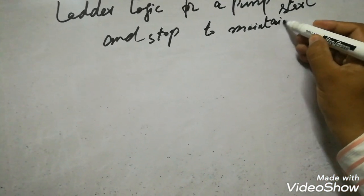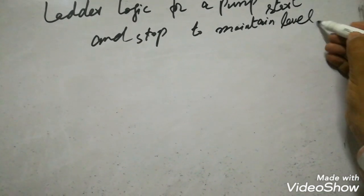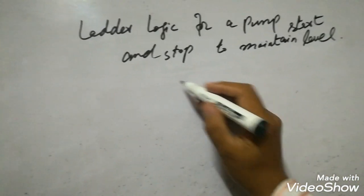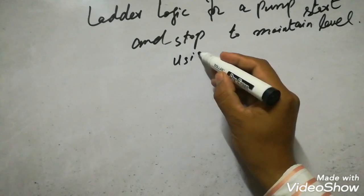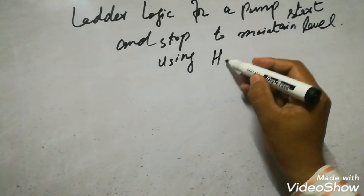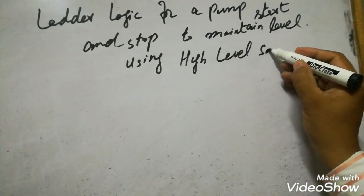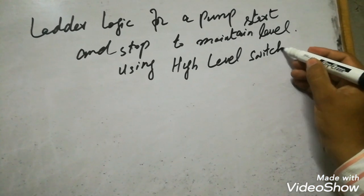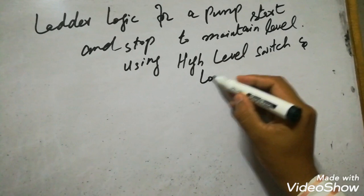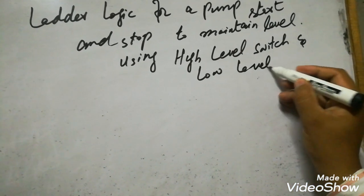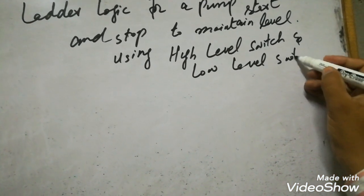As per our setting of the level switch, one level switch we will use for the detection of low level and one level switch we will use for the detection of high level. So at the low level the pump will start and it will stop when the level is high.